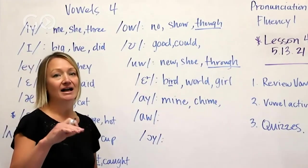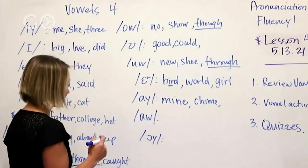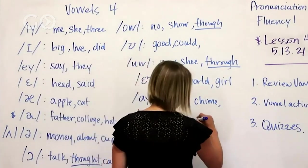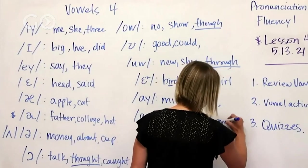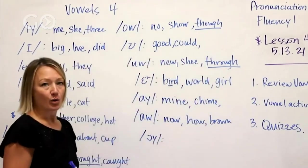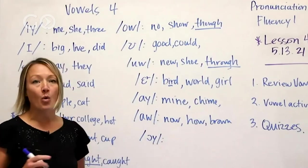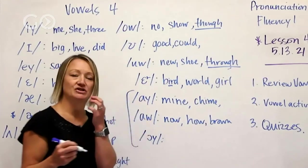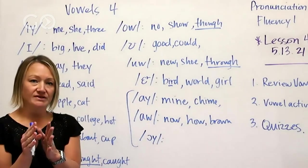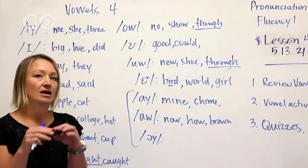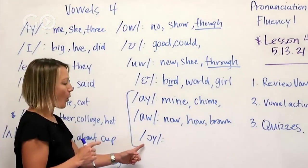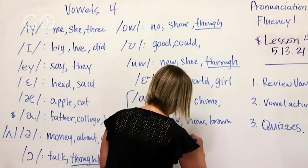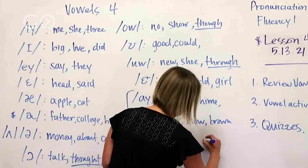Then ow - now, how, brown. And then the last one here is oi. These are all what we call diphthongs. Don't worry about that word too much, just know that it means that you have two vowel sounds that come together to form one sound. Oi - oil, boy, annoy. You've got a couple different spellings there.